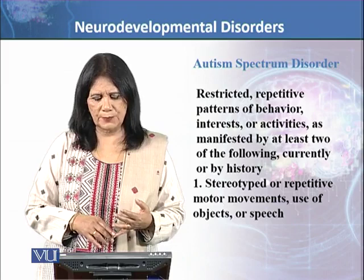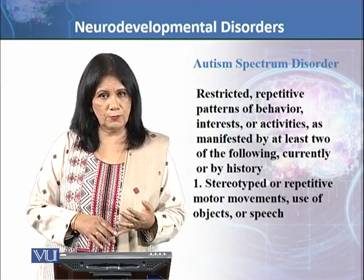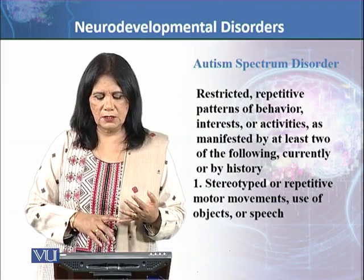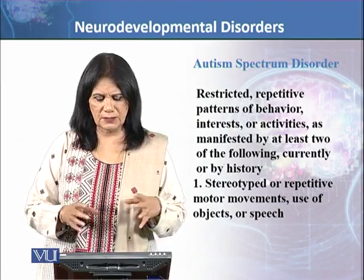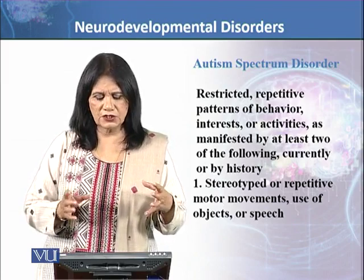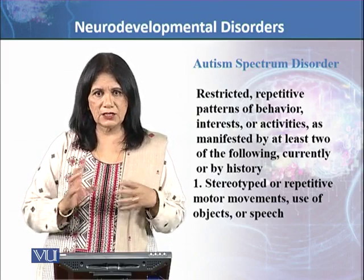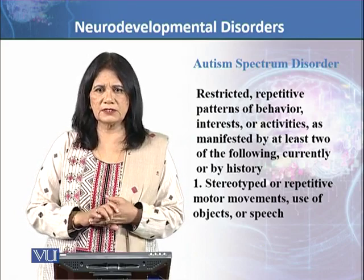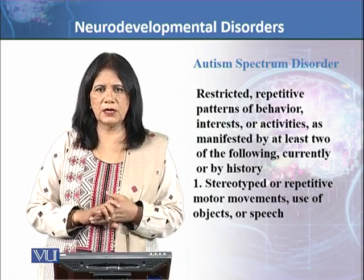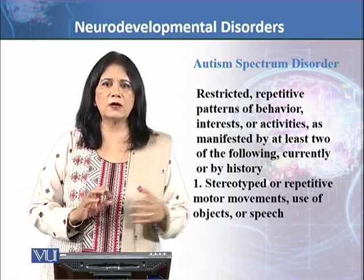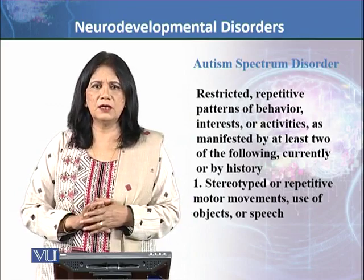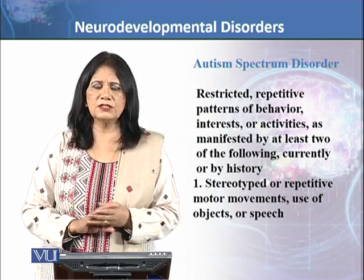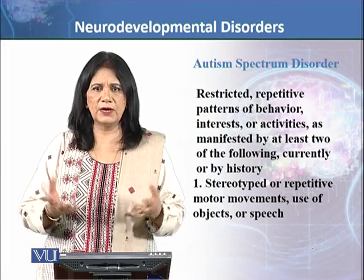The first subtype of restricted repetitive behavior includes stereotyped and repetitive motor movements and use of objects and speech. For example, a child will repeatedly perform a certain motor movement — it could be rocking or pacing. You may observe them repeating a certain motor movement pattern continuously.